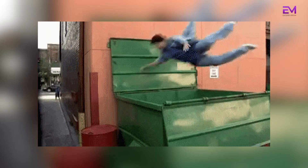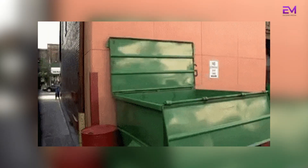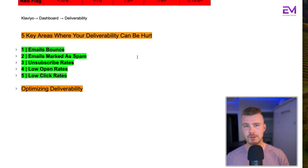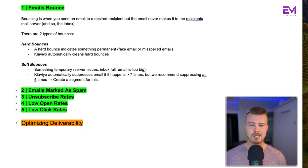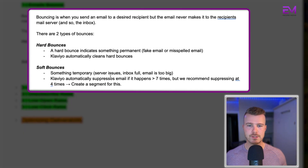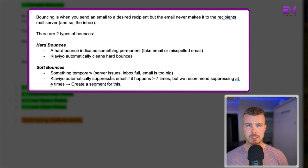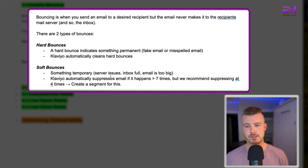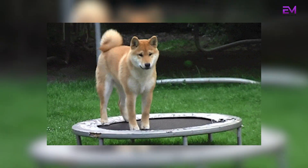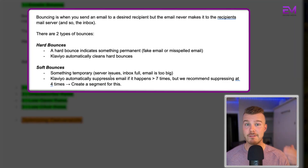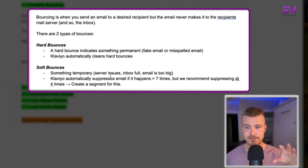If you've determined your deliverability is poor, there are five key areas where it can be hurt. The first is where emails bounce. Bouncing is basically when you send an email to a recipient but it never makes it to that recipient's mail server. There are two types: hard bounces, which are permanent issues like a fake or misspelled email — if you're using Klaviyo, they automatically clean these for you.